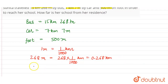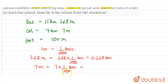Next, 7 meters means 7 × (1/1000) kilometers. Dividing by 1000 means three zeros, so we place the decimal three places from the left: 7 meters is equal to 0.007 kilometers.